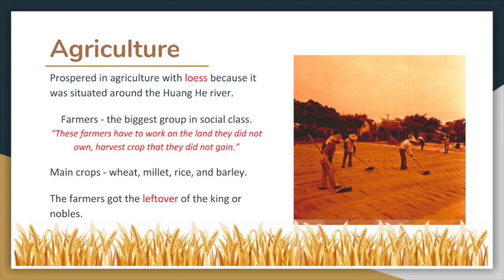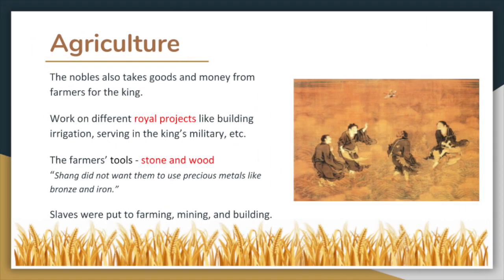main crops were wheat, millet, rice, and barley. The land was either owned by nobles or the king. The farmers that grew crops only got the leftovers from the king or noble. The nobles also took goods and money from farmers for the king.